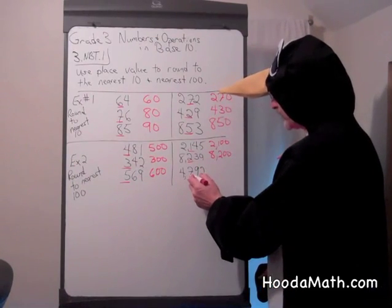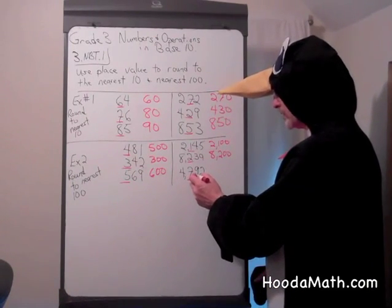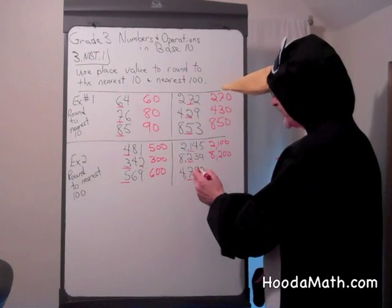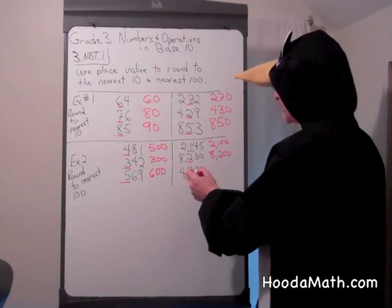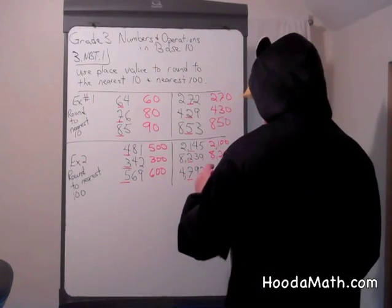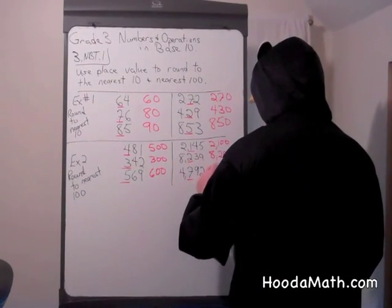Once again, we look at the hundreds, look to the digit to the right. It's a 9, which is greater than 5, so what do you think happens? Yes, the 700 becomes 800, so it's 4,800.